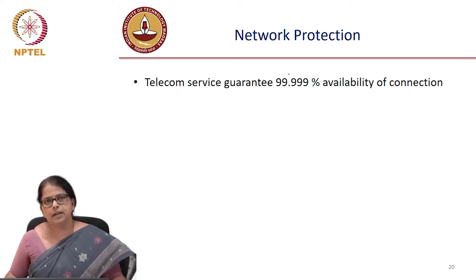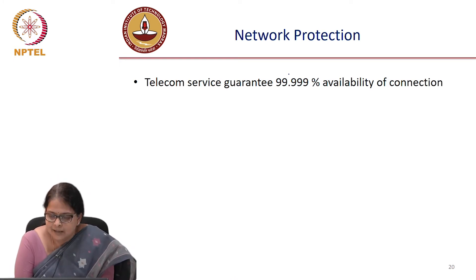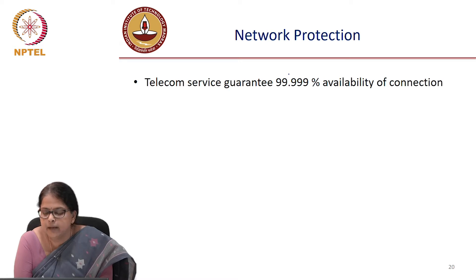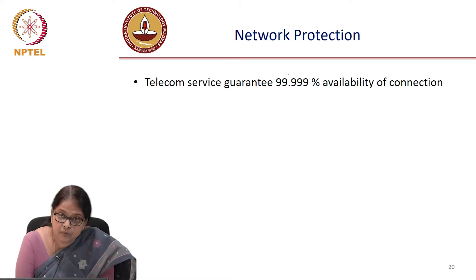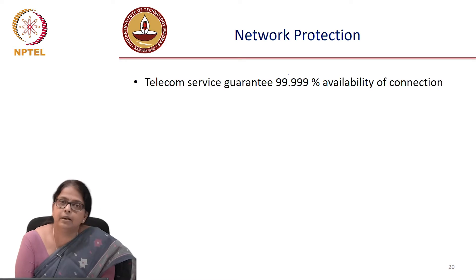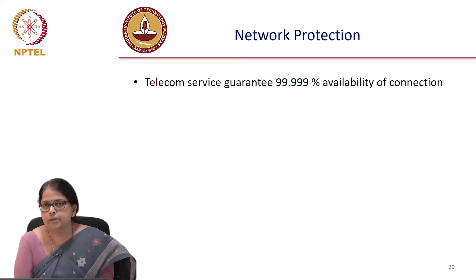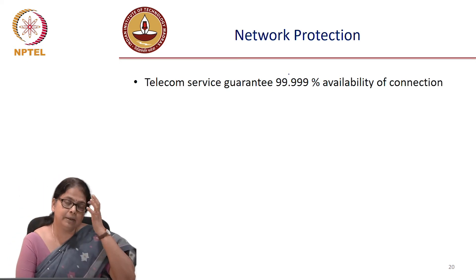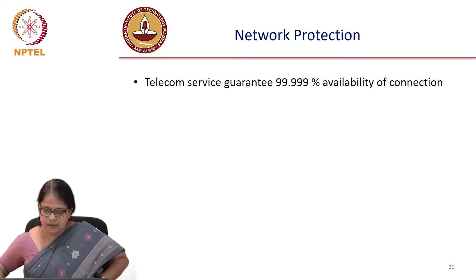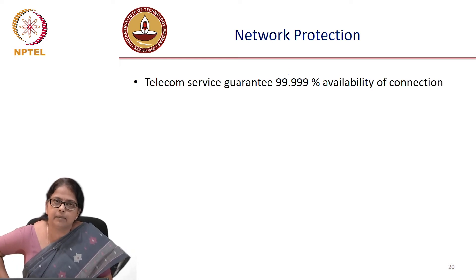We move on to the next topic which is network protection. Telecom services actually guarantee 99.999% — a 3-sigma level protection — in the sense that the connectivity is guaranteed for 99.999% of the time, which means the downtime expected is really, really low in an optical fiber link. The reliability requirement for the optical link is this.